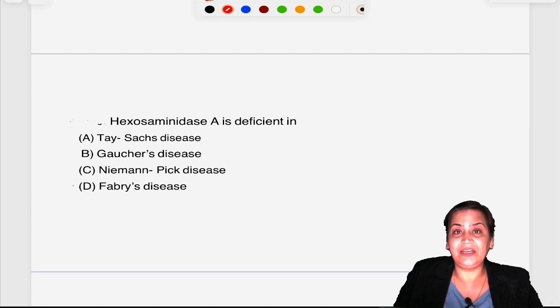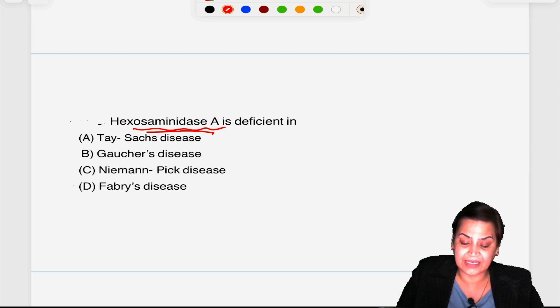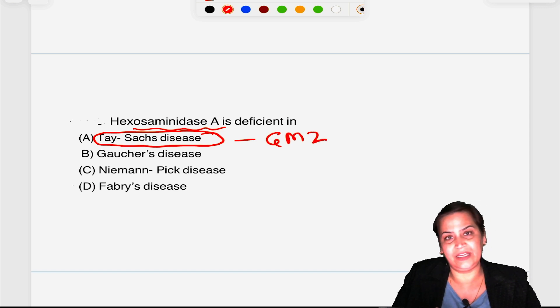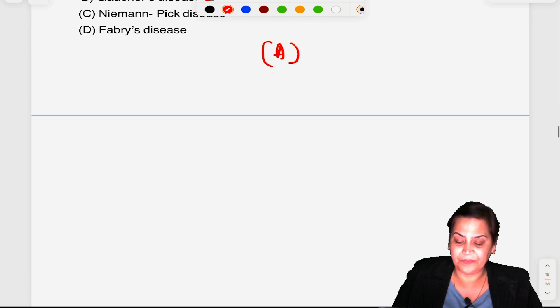Hexosaminidase A is deficient in? This is a question from lipid metabolism. Again, an FMGE question. Always remember hexosaminidase A is deficient in Tay-Sachs disease which is GM2 gangliosidosis. In Gaucher's, the deficient enzyme is beta glucocerebrosidase. Niemann-Pick disease has sphingomyelinase deficiency and Fabry has ceramidase. So Tay-Sachs disease has hexosaminidase A deficiency.